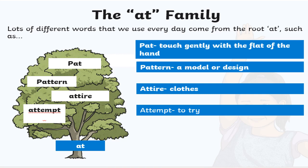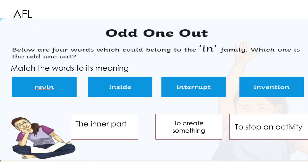The 'at' family. Lots of different words that we use every day come from the root 'at', such as: 'pat', which means a gentle touch with the flat of the hand; 'pattern', which means a model or design; 'attire', meaning clothes; and 'attempt', which means to try. These words belong to the 'at' family.